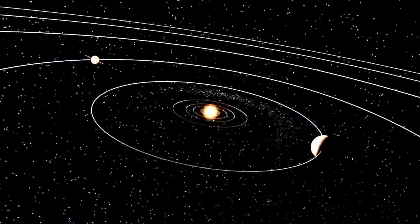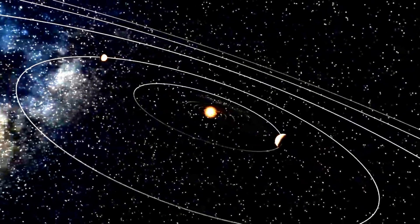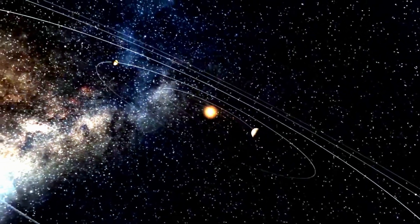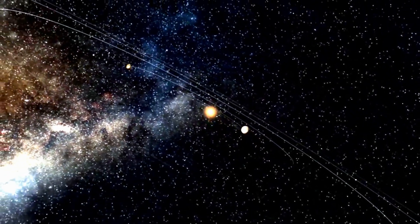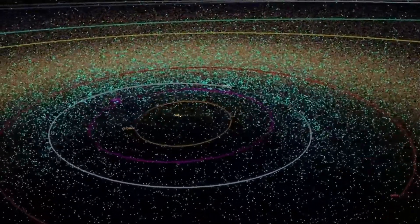According to certain approximations, the solar system is believed to harbor a range of interstellar objects, with estimates ranging from 1,000 to 10,000, which are predominantly located in the remote regions of the solar system and remain imperceptible to our observations.